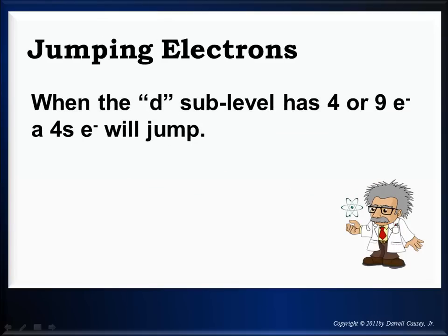When the d sub-level has 4 or 9 electrons, a 4s electron will jump into the d, last d orbital. So you'll notice there, there it is. 4s1, 3d5 instead of 4s2, 3d4. And then here with copper, we end up with 4s1, 3d10 instead of 4s2, 3d9. And electron jumps.